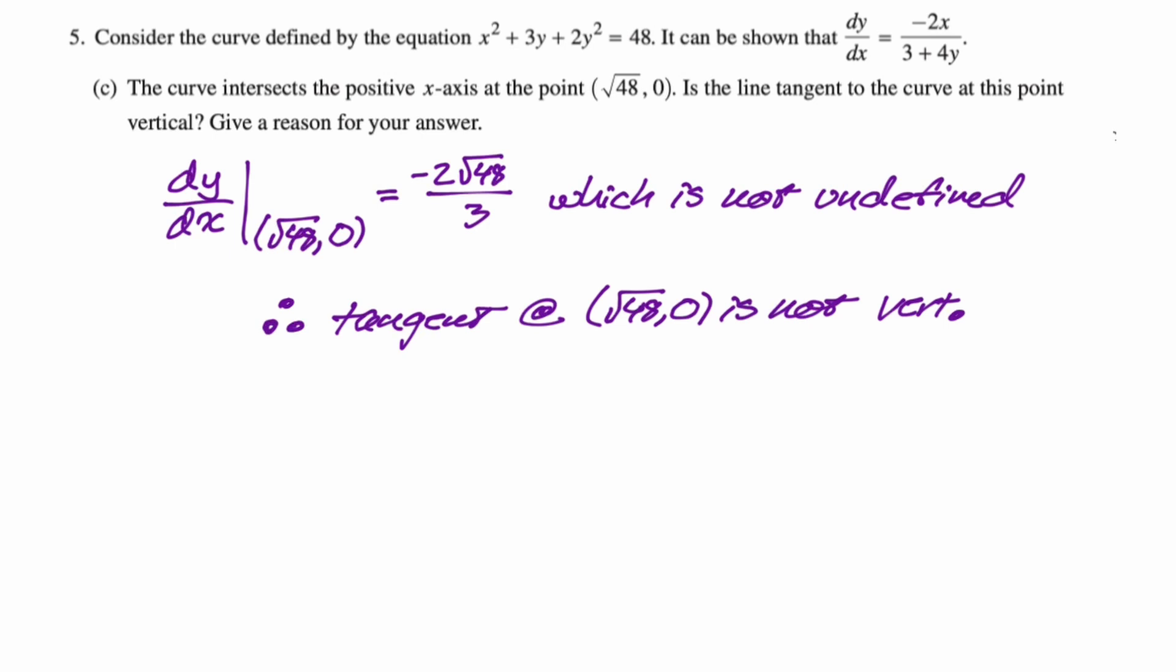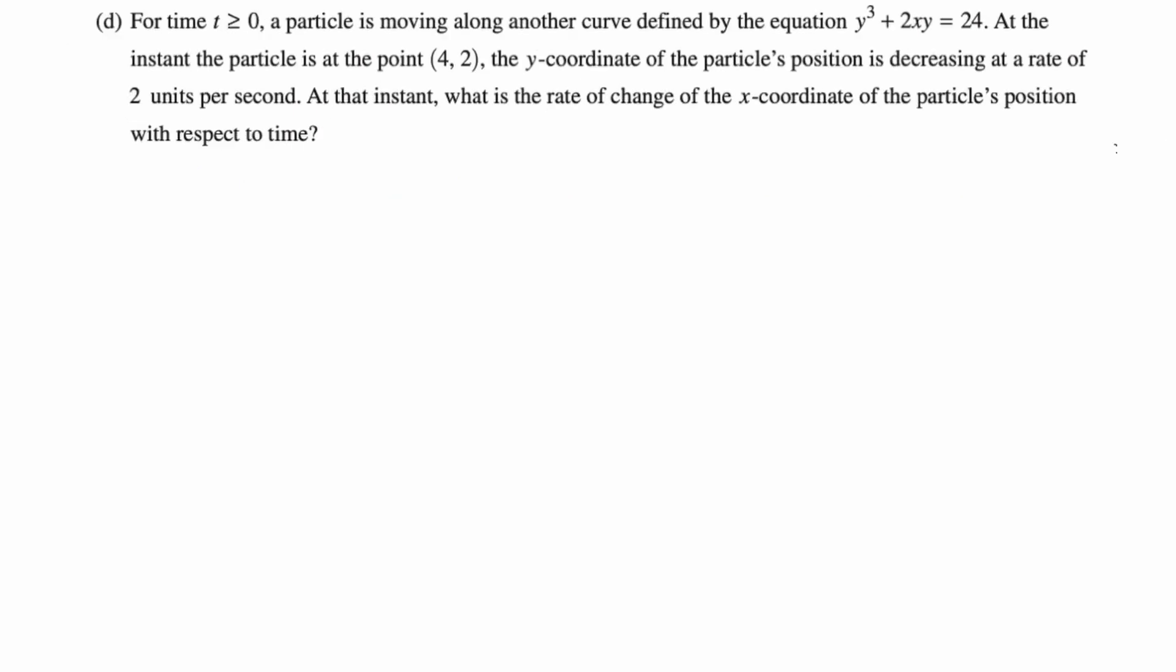Not really sure what they're getting at in parts B and C here, other than, like, can you plug in and think about implicit relationships, I guess. So I mean, it's good. They're good questions. They're just weird. Let's look at the next part. Totally unrelated. For time t greater than or equal to 0, I'm not kidding when I say totally unrelated. It's an entirely different equation and different problem, basically.